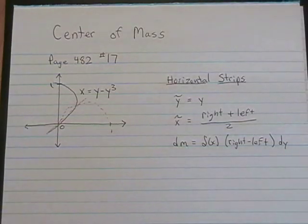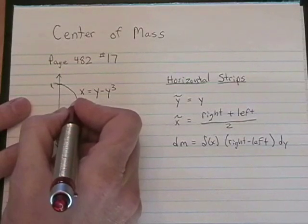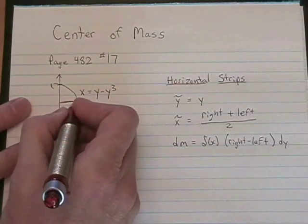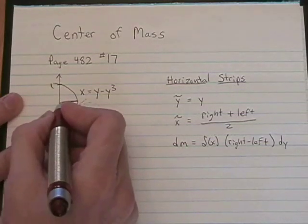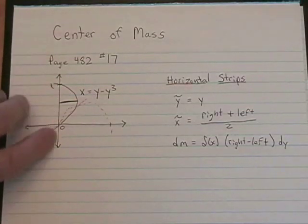I'm going to use horizontal strips because I need to have two distinct boundaries. My right side boundary is the curve x equals y minus y cubed, and my left-hand boundary is x equals 0, the y-axis.